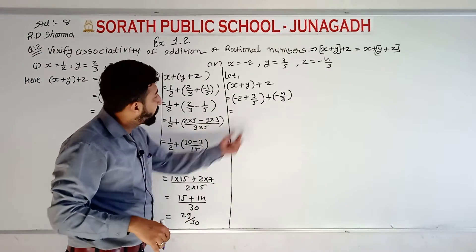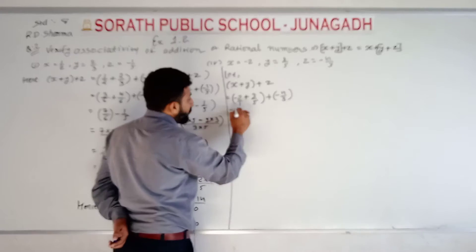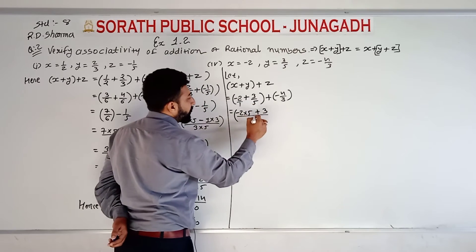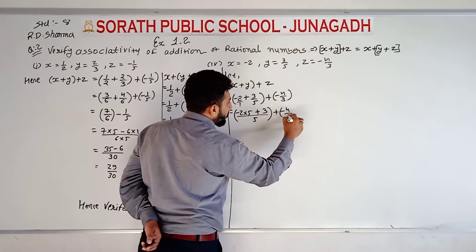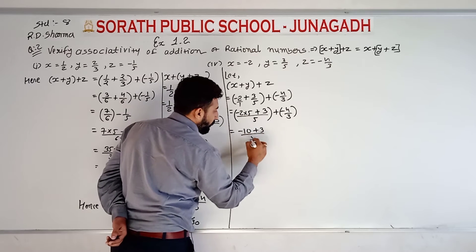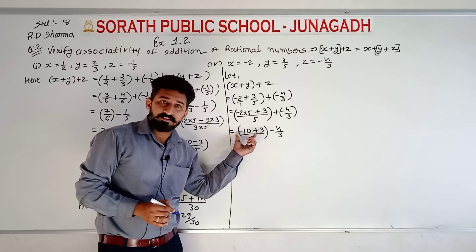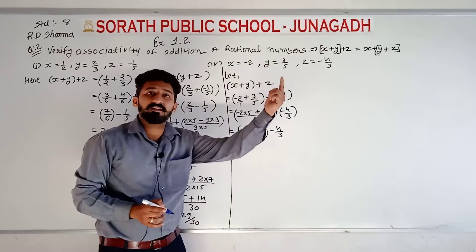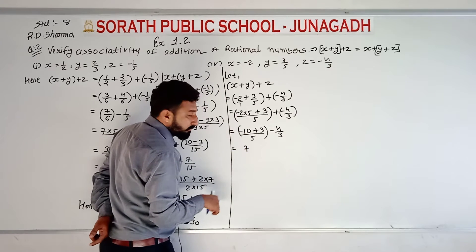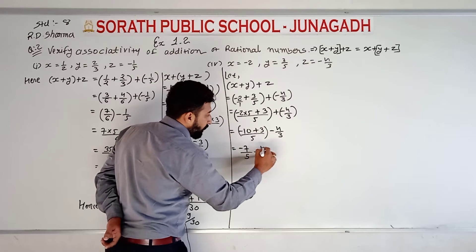Here again cross multiplication in the bracket. Minus 2 multiplied by 5, addition sign as it is, 3 ones are 3, upon 5 ones are 5. Plus minus 4 by 3. So minus 10 plus 3 upon 5, plus minus 4 upon 3. Opposite signs mean subtraction: ten minus three is seven, and sign taken from the bigger value, which is ten, so minus. So minus 7 upon 5, minus 4 upon 3.